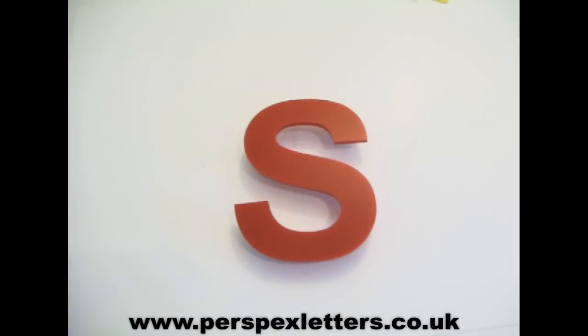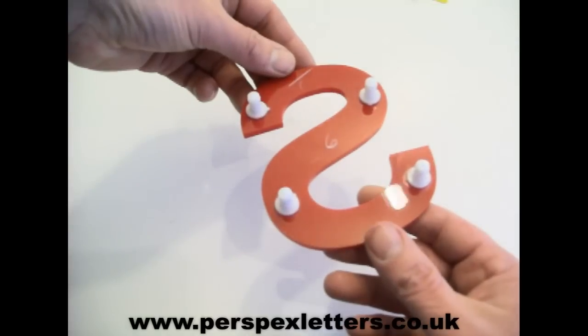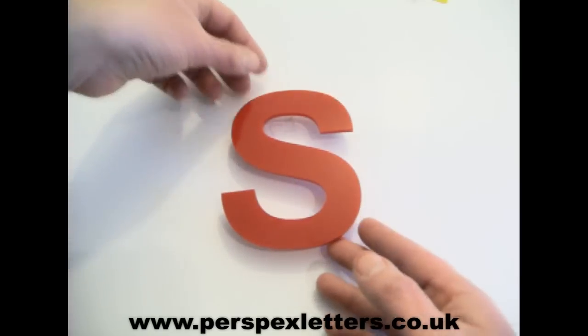This is an example of a 5mm thick Perspex letter in a red acrylic. It has simple fixings on the back, part of a larger order.